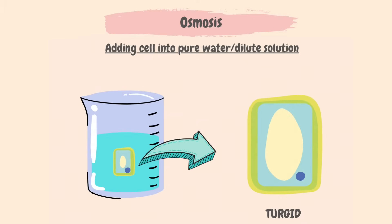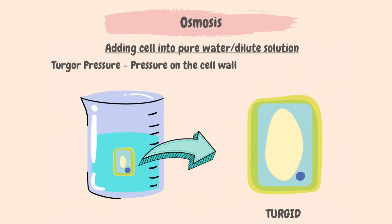Now let's investigate the effects on plant tissues in different concentrations. Adding a cell into pure water or dilute solution: there will be a higher water potential outside the cell than inside, and therefore water will move into the cell. As water enters the cells, they become turgid or swollen due to the high water content. An animal cell can burst if too much water enters. A plant cell has support from its cell wall and will most likely maintain its turgidity without bursting. Turgor pressure is the pressure on the cell wall from the cell membrane pushing upon it.